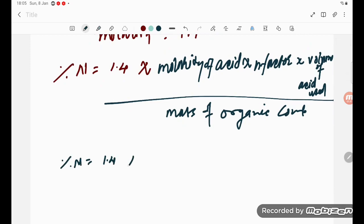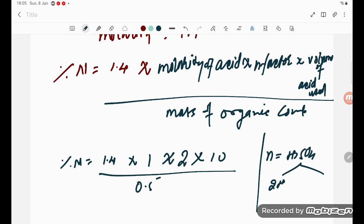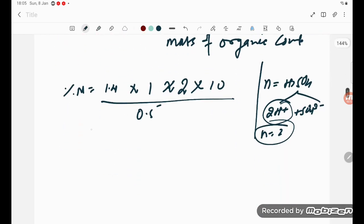Now, percentage nitrogen equals 1.4 multiplied by: molarity of acid (1 molar), n-factor for H2SO4 (which is 2, because it gives 2H+), volume of acid (10 ml), divided by mass of organic compound (0.5 grams). The n-value for H2SO4 is 2 because it ionizes to give 2H+ plus SO4 2-.